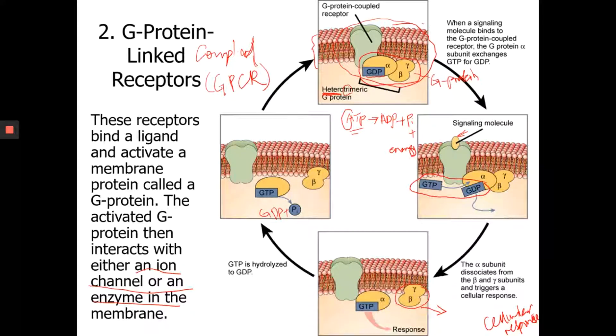So inactive, activated, trigger response, and then it goes back to the inactive form. So this is how the G protein-linked receptors work.